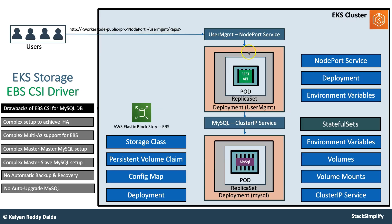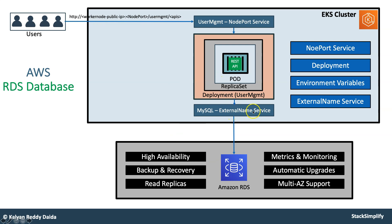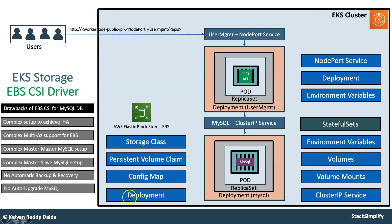From there we jump into the big course, starting with EKS storage with EBS CSI driver — Elastic Block Store. We'll learn how to write a deployment, a MySQL Cluster IP service, a node port service, environmental variables, volumes, and volume mounts. You'll do live template writing and understand all these concepts. You'll also understand the drawbacks of EBS CSI driver, the advantages of using RDS database, and then implement it with RDS database using an ExternalName service. This covers storage classes, persistent volume claims, and config maps.